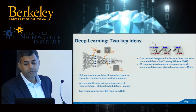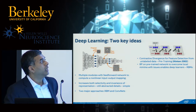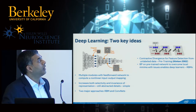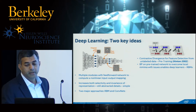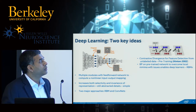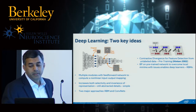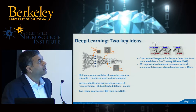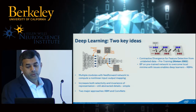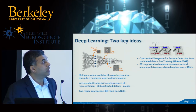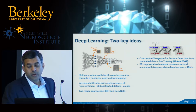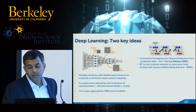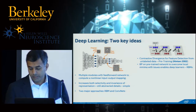One of these ideas was contrastive divergence for feature detection from unlabeled data. The idea is that you have data coming in through neurons called visible inputs, which gets projected onto a hidden layer. There is a back-and-forth process between these two to set up a system where inputs can be predicted by the hidden layer units reliably. You do this over and over through many such pairs of modules to set up the system as a good auto-encoder, where each layer encodes its features in the layer below it. If you stack this together and do back-propagation on this pre-trained network, you overcome the local minima problems — this is the restricted Boltzmann machine idea.